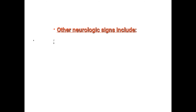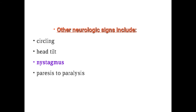Other neurological signs may include circling, head tilt, nystagmus, paresis to paralysis of the body, and focal to generalized seizures.